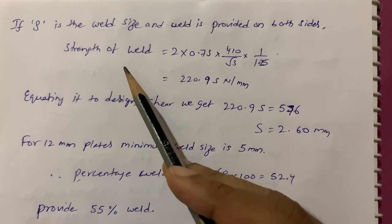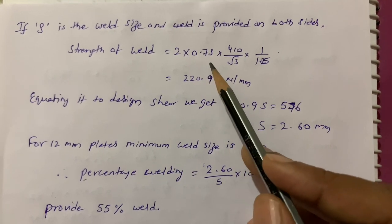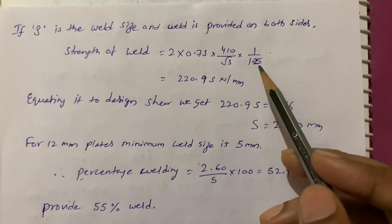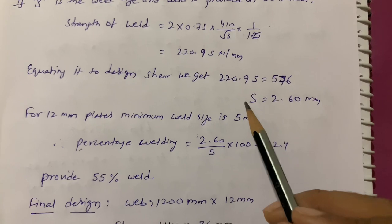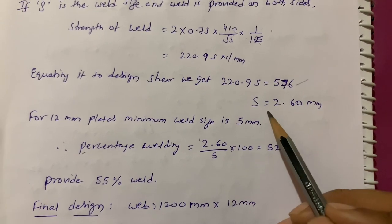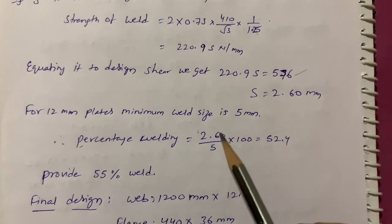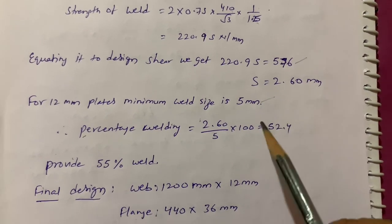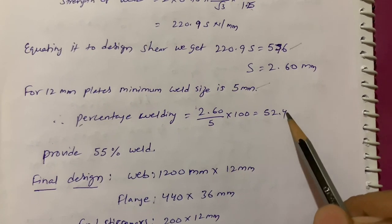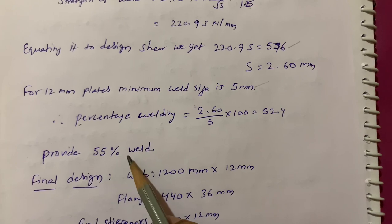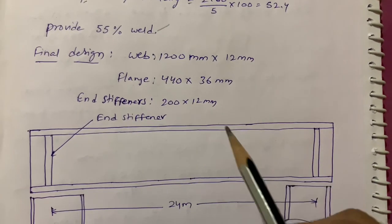Equating weld strength: 2 × 0.7s × fu/(√3 × γmw) = 0.576 kN/mm, giving s = 2.6 mm. Per Table 21, minimum weld size for 12 mm plates is 5 mm. Weld percentage = 2.6/5 × 100 = 52.4%, so provide 55% intermittent weld.